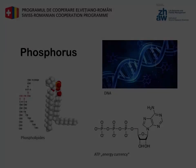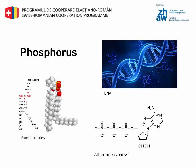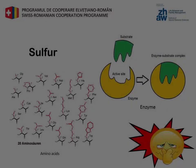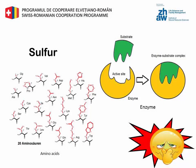Phosphorus is used for three main functions: structural function — formation of nucleic acids and phospholipids; energy function — ATP and ADP; and enzymatic function — coenzyme A.